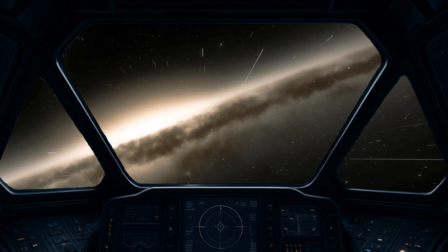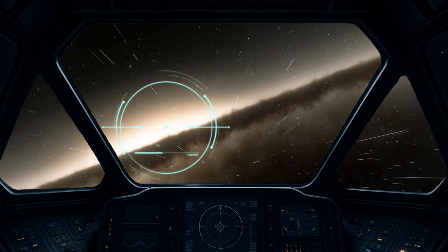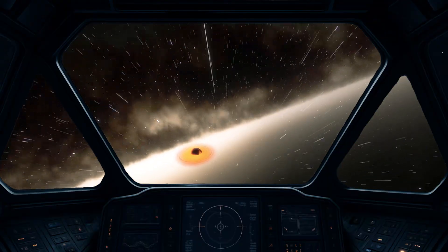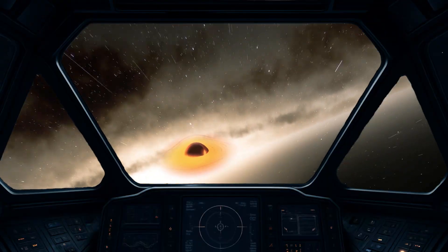If we built a spacecraft with infinite speed and traveled straight to the center of the Milky Way, we'd expect to see a supermassive black hole. But some scientists found real evidence that it might not be a black hole at all. They believe it could be a wormhole.